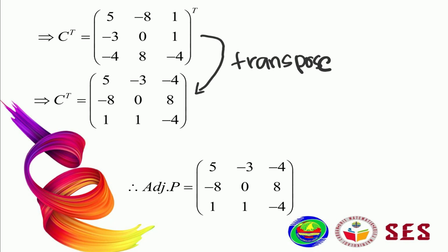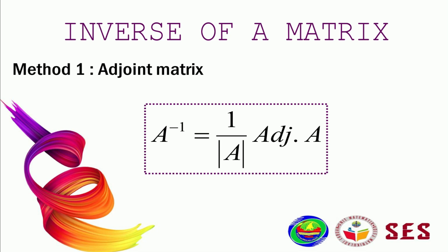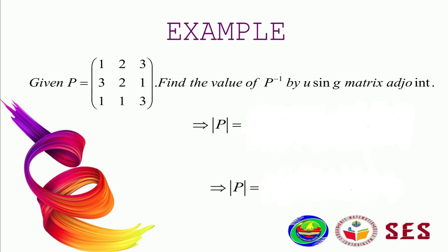Now we learn how to find the inverse of a matrix. The first method uses the adjoint matrix. The formula is: A inverse equals 1 over the determinant of A, multiplied by adjoint A. In the next example, given matrix P, find P inverse using the adjoint matrix method. We need to find the determinant first, then find the adjoint. Pause the video and try to find the determinant of P.